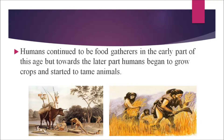Humans continued to be food gatherers in the early part of the Mesolithic age, but towards the later part they began to grow crops and started to tame animals. In the Paleolithic age, people didn't know how to grow crops — they were nomads and food gatherers who moved from place to place in groups, hunted animals, and gathered fruits that grew naturally. In the Mesolithic period, humans continued as food gatherers at first, then later began to grow crops and tame animals.